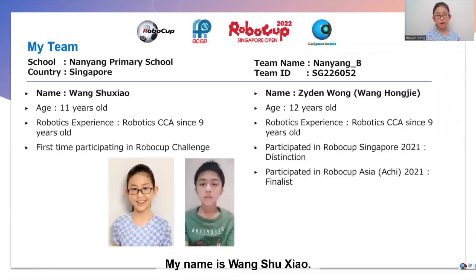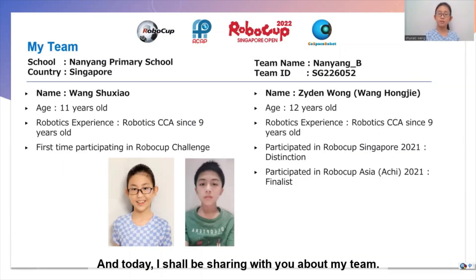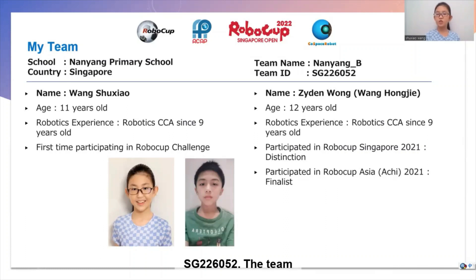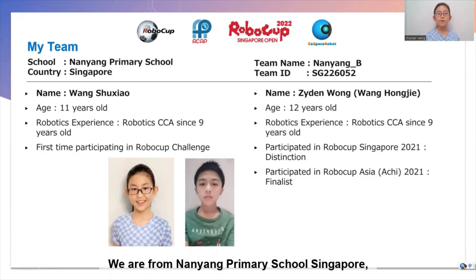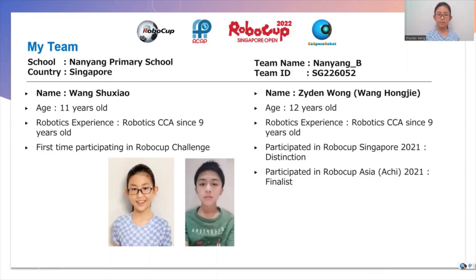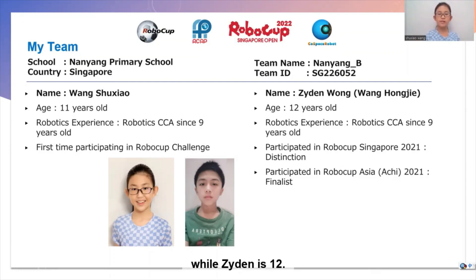My name is Wang Shuxiao and today I shall be sharing with you about my team. Our team name is Nanyangbi and our team ID is SG226052. The team members are Wang Shuxiao and Zeydun Wong. We are from Nanyang Primary School, Singapore, and we are both in our school's robotics CCA. I am 11 years old this year while Zeydun is 12.